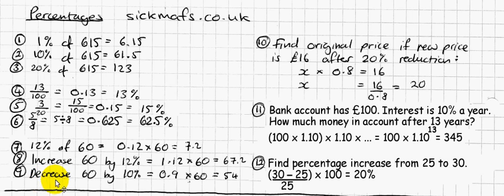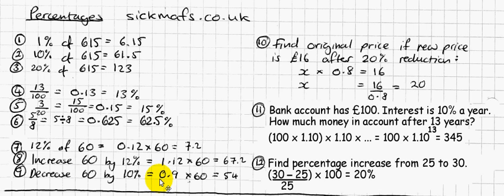Now, if you want to decrease 60 by 10%, there's another idea. Decreasing by 10% means what I really want to know is what's left after decreasing. If I decrease by 10%, I'm left with 90%. So what is 90% of 60? It's 0.9 × 60, which is 54. I've worked out 60 after decreasing by 10%, which is the same as finding 90%.